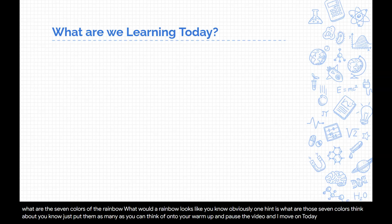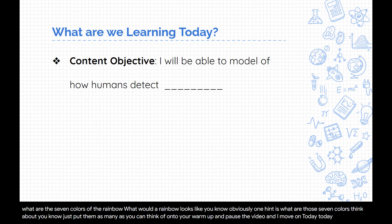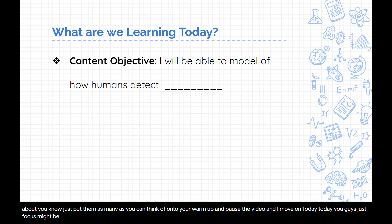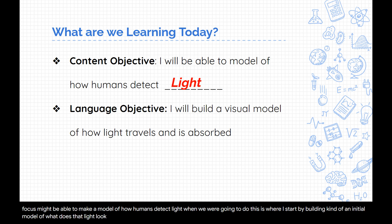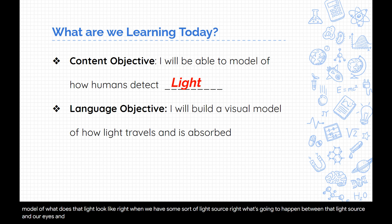Today, your focus is going to be able to make a model of how humans detect light. We're going to start by building an initial model of what that light looks like — when we have some sort of light source, what's going to happen between that light source and our eyes, and then what happens inside the eye, and then what happens between the eye and the brain?